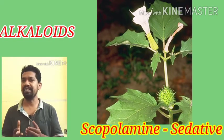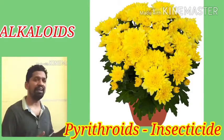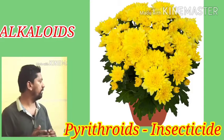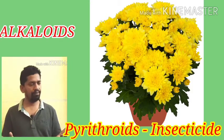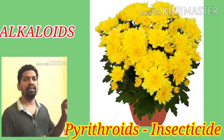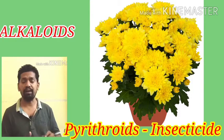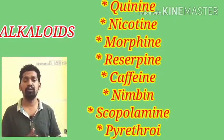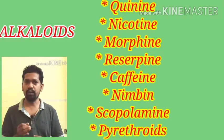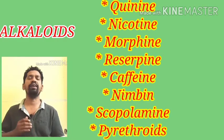The last alkaloid in our syllabus is pyrethroids. Pyrethroids are a type of alkaloid given by the flower of the Chrysanthemum plant. We use pyrethroids as an insecticide. All these alkaloids — quinine, nicotine, morphine, reserpine, caffeine, scopolamine, and pyrethroids — are actually wastages of different plants, but due to their economic importance we use them as medicine and in various applications.